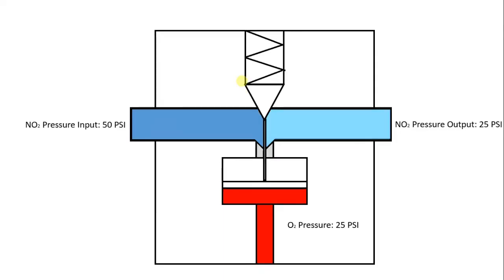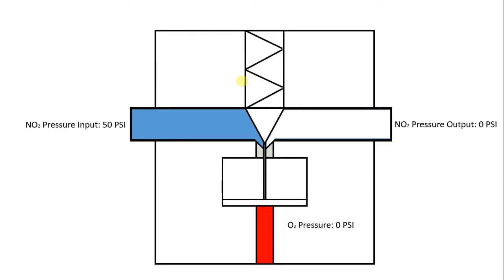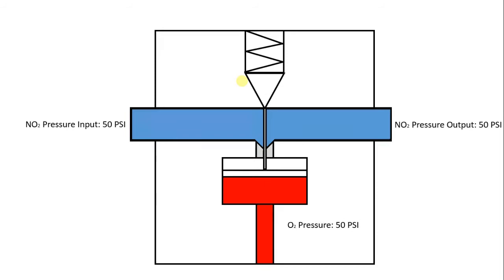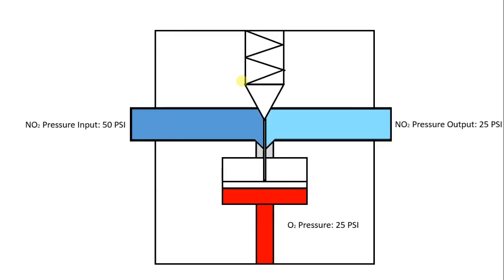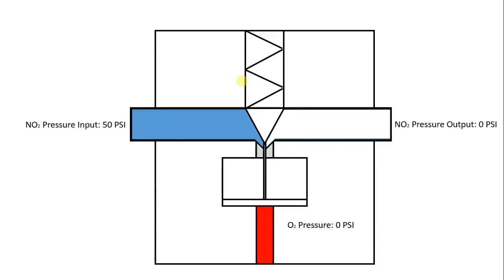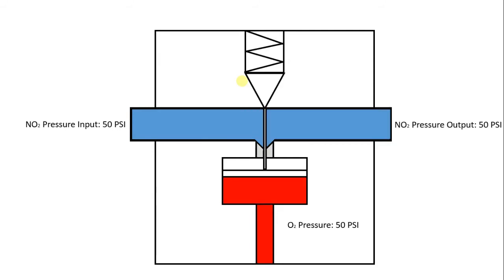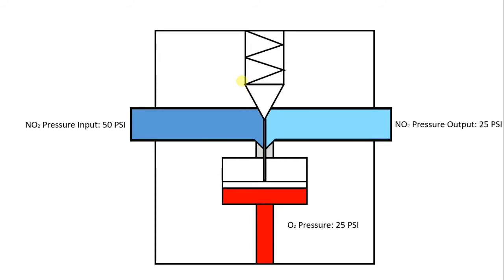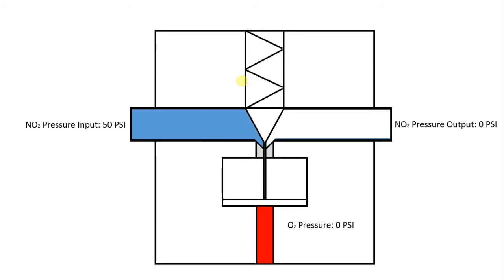The fail-safe valve is located in the intermediate pressure circuit after the primary nitrous oxide pressure regulator. Its function is to ensure that if the pressure in the oxygen supply circuit decreases to less than 30 psi, the flow of nitrous oxide will be prevented to avoid delivery of a hypoxic mixture to the patient.